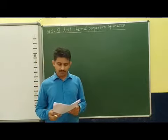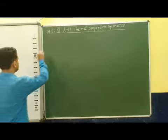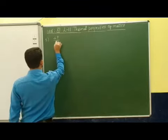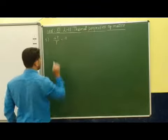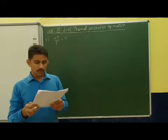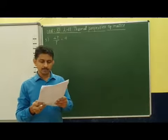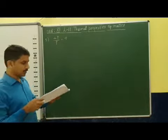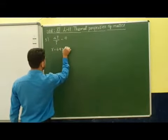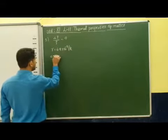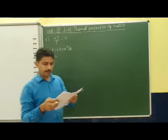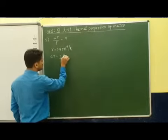So we have to find what is the fractional change in its density. In this question, we have to find delta rho divided by rho. We are also given gamma, the coefficient of volume expansion, which is 49 × 10⁻⁵ per degree Celsius. Delta T, the change in temperature, is also given as 30 degrees Celsius.